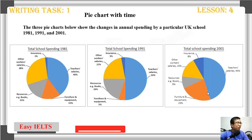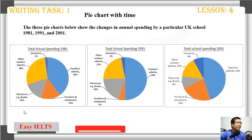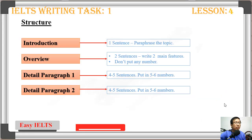Hello, welcome back to Easy IELTS. Today is lesson 4 and today we look at the pie chart with time. This is the topic for today — we have three pie charts in three different years, so the structure we use to write our task one is very simple.